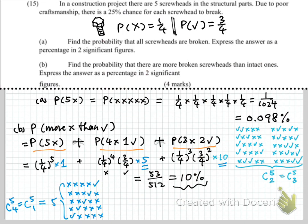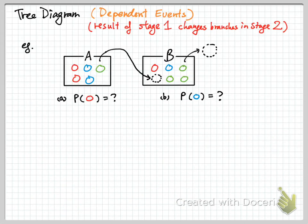But now, in this video, we are talking about — we want to start another idea — dependent events. Dependent events means that what happens in the first stage has an impact on the second stage.